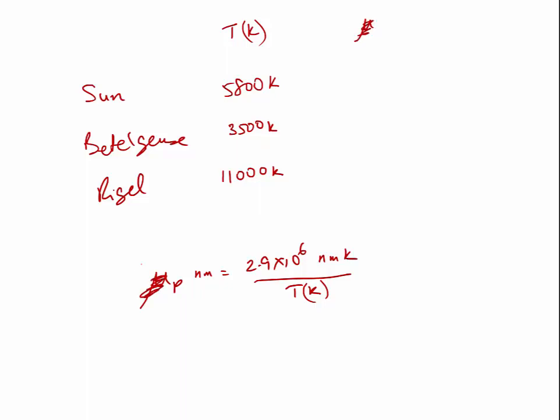So we can use our relationship, lambda peak in nanometers is 2.9 times 10 to the 6 nanometer Kelvin over the temperature in Kelvin. So when I plug in the temperature of 5,800 Kelvin in this equation, the lambda peak I get, sorry, I'm not sure why I used mu here. Lambda peak for the sun would be 500 nanometers. You can check that in your calculator. And then for Betelgeuse, you will get 830 nanometers. And for Rigel, you'll get 260 nanometers.